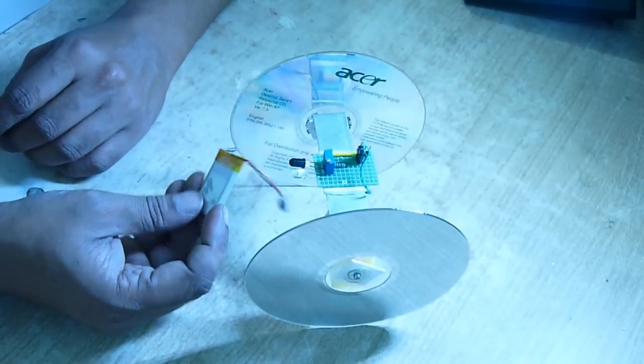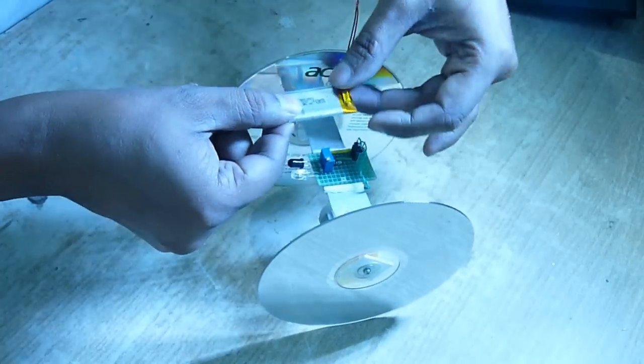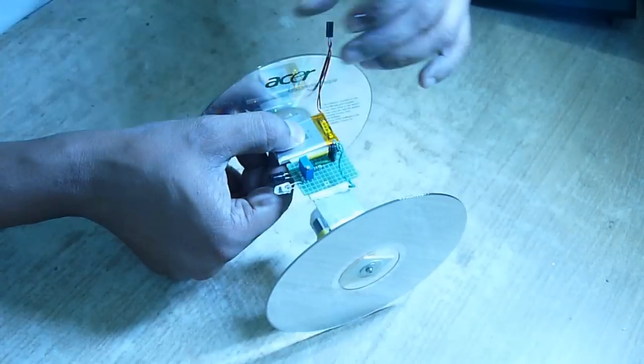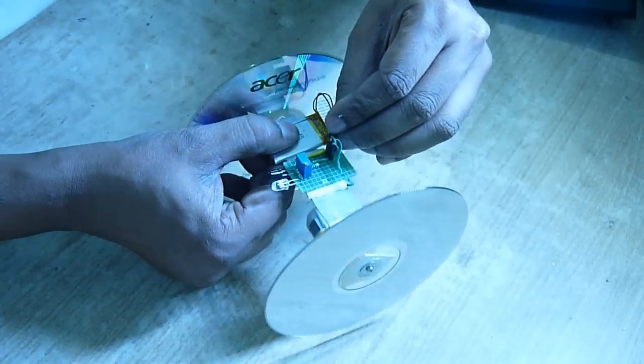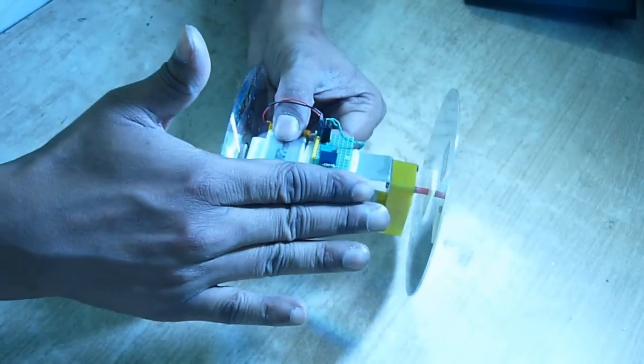Stick it on the aluminum clamp and power up the circuit. Now when you bring your hand close, see the motor is rotating.